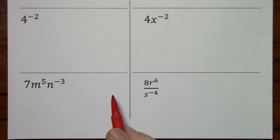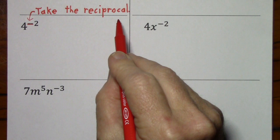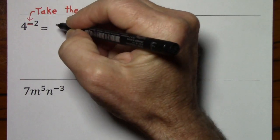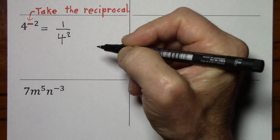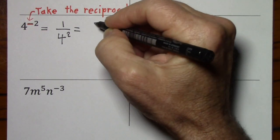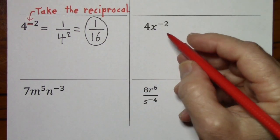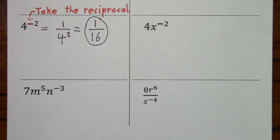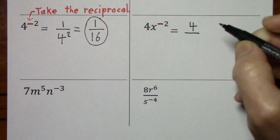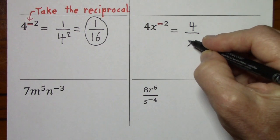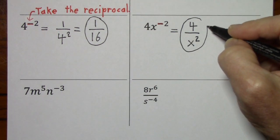Now we'll look at some examples with negative exponents. Remember, the negative exponent effectively means take the reciprocal. So four to the negative two is equivalent to one over four squared — notice it's a positive exponent now that it's in the denominator — and four squared is 16. Now over here, it's x to the negative two, so this four is going to stay in the numerator, but x to the negative two shifts to the denominator. Now it's a positive exponent. This is your answer.